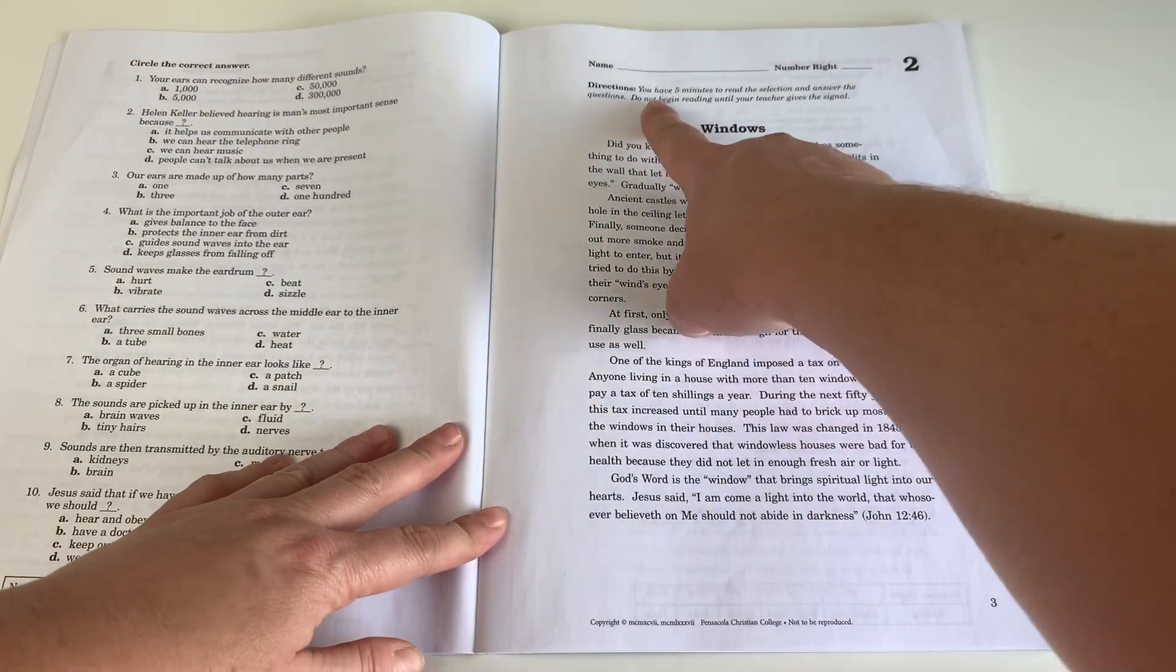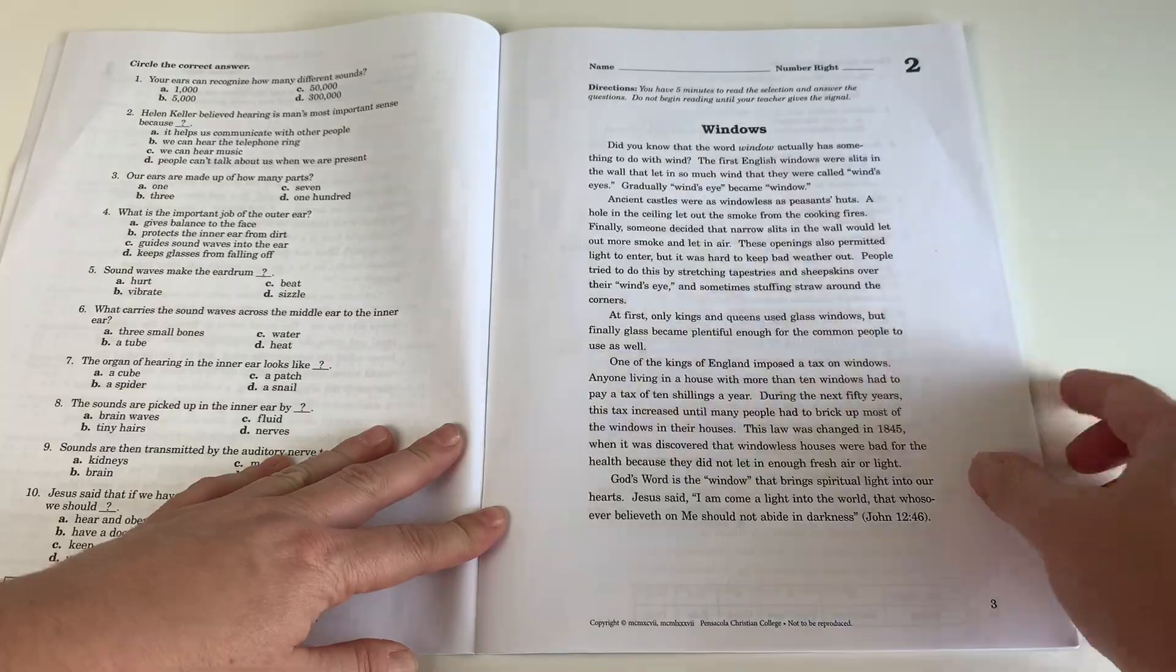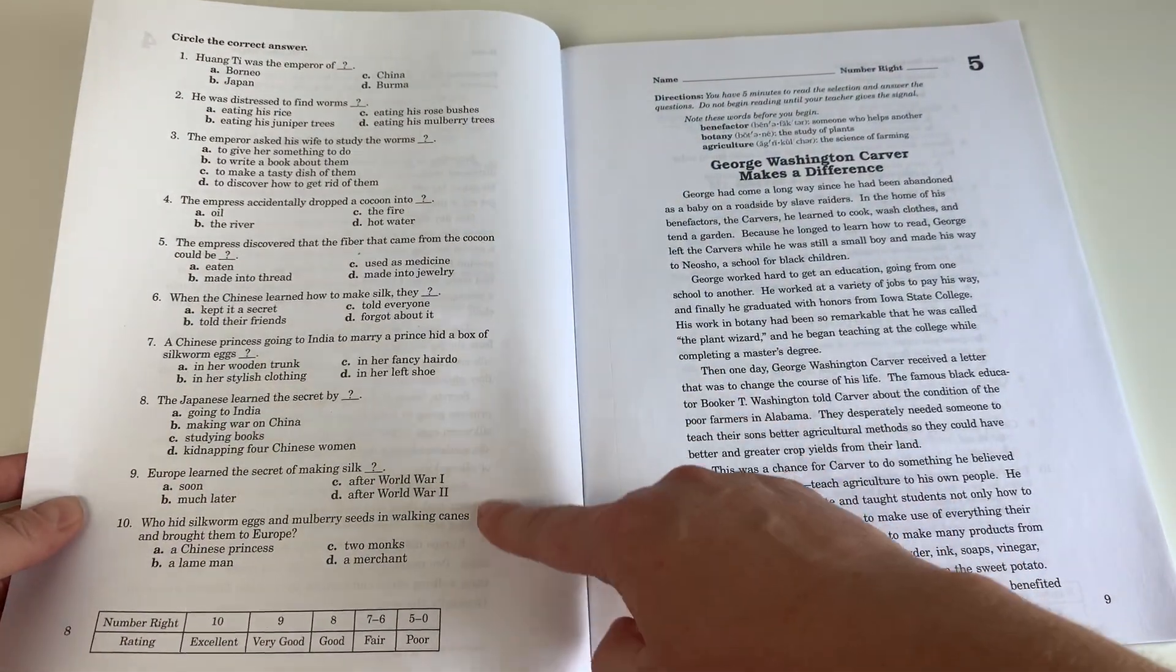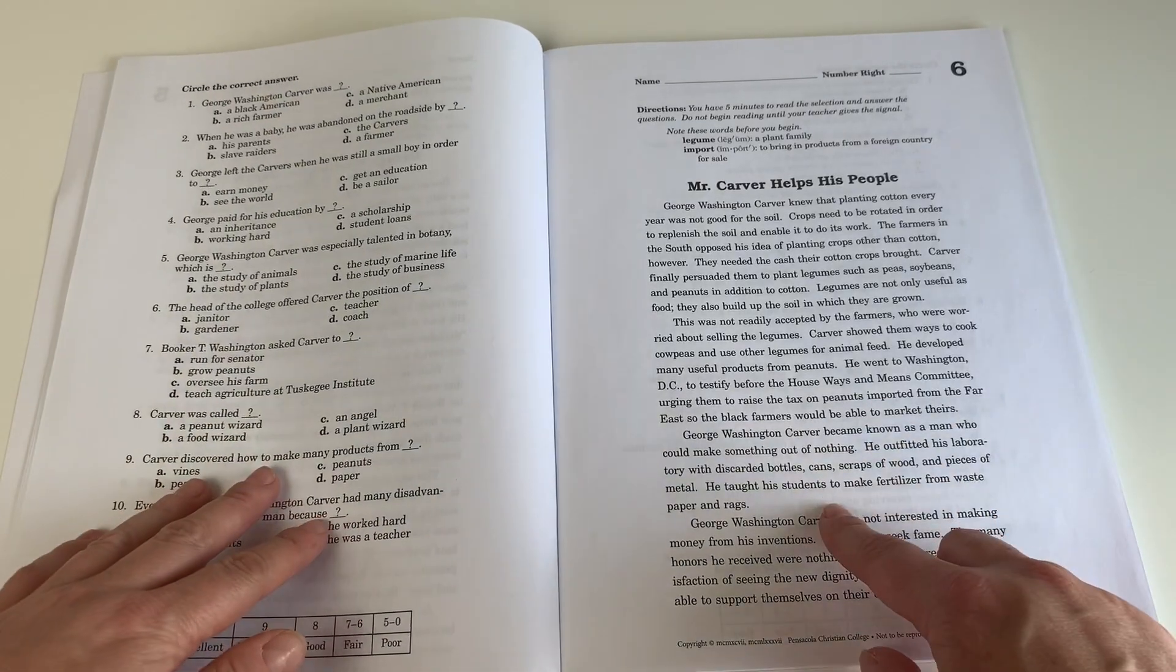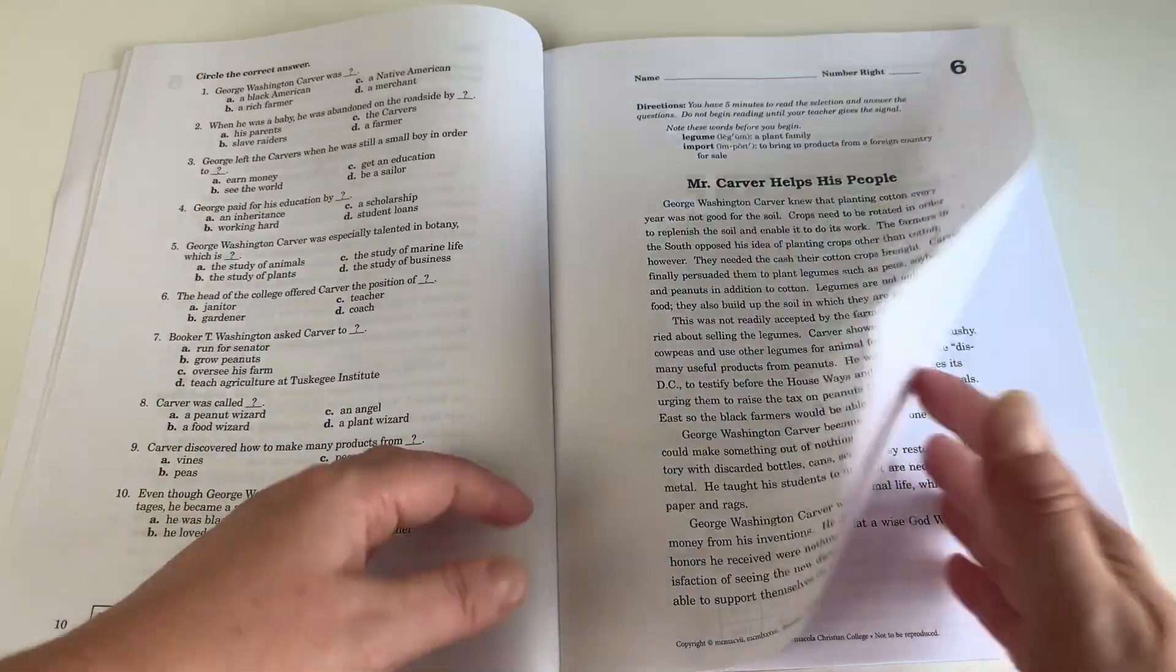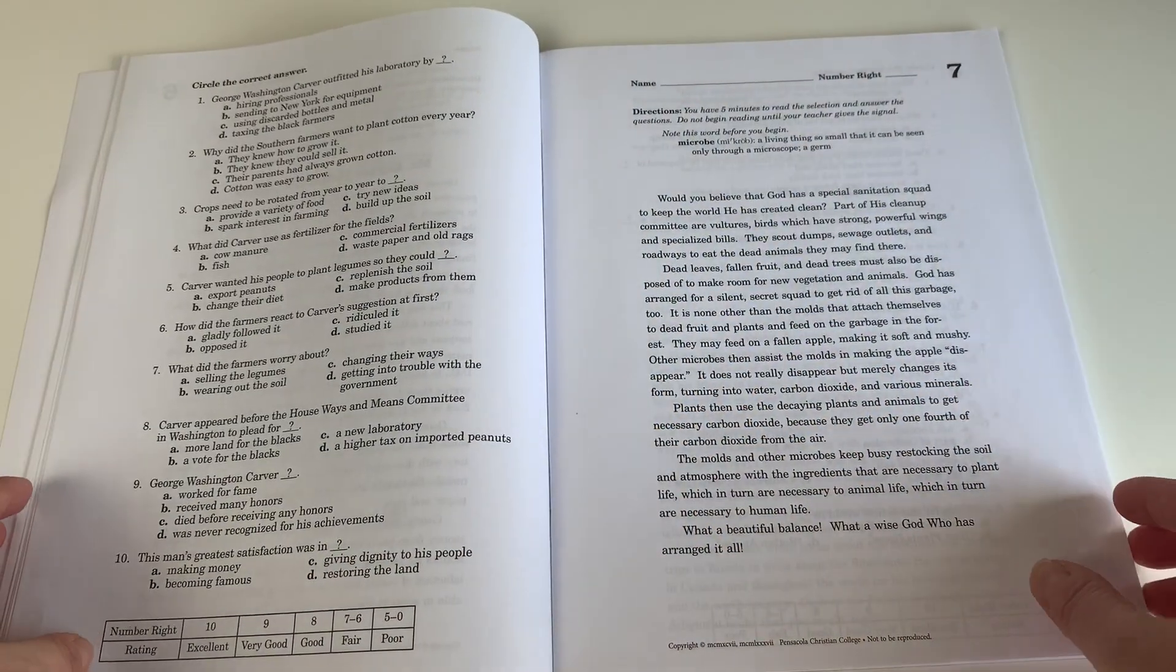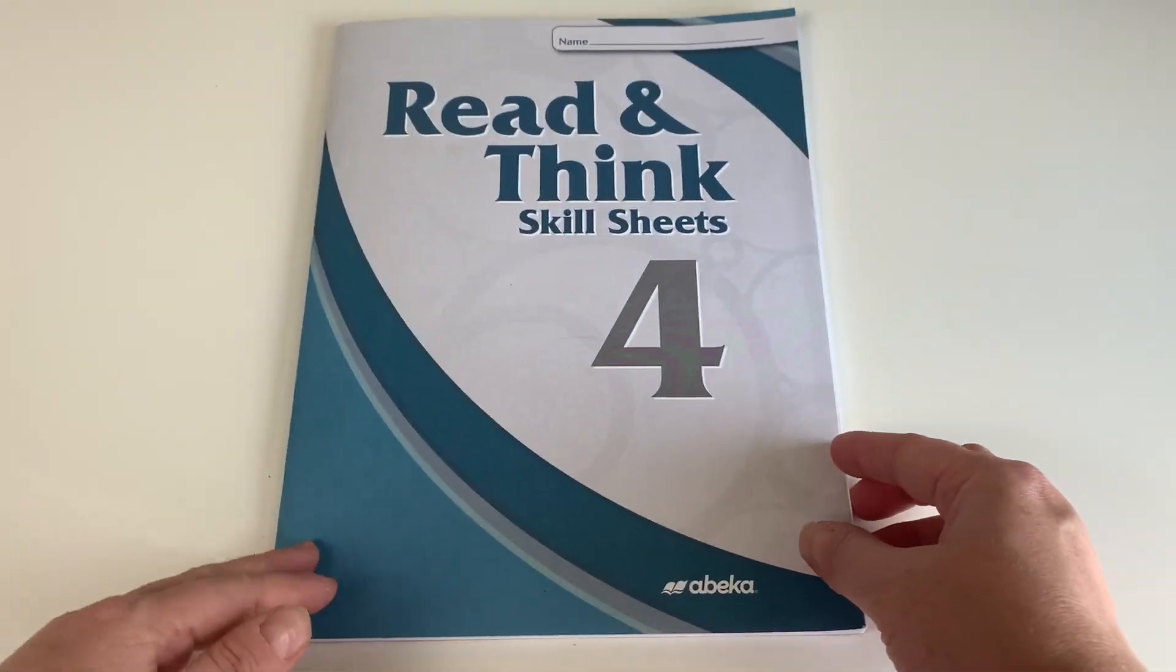So they'll have a passage to read and they have five minutes to read it, and then they have comprehension questions on the back to answer. This really helps them with working on understanding what they're reading and how to find information in the text. So I really like this resource for working on reading comprehension skills.